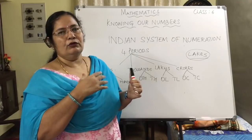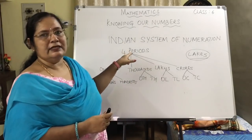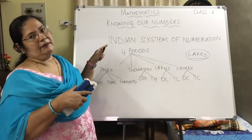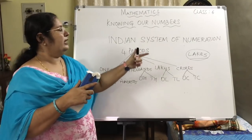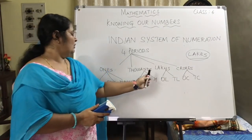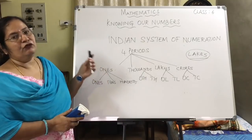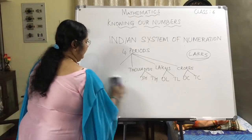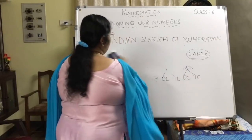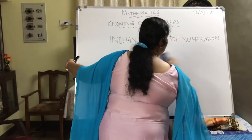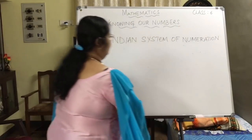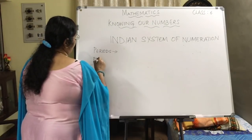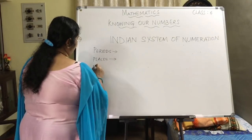So let us try to draw the place value chart for the Indian system of numeration. There are four periods and — two plus two plus two plus three — totally nine places in the Indian system of numeration. Let us draw the place value chart and represent the periods, places, and also the place values. You have the periods along one side, then the places, then the place values.